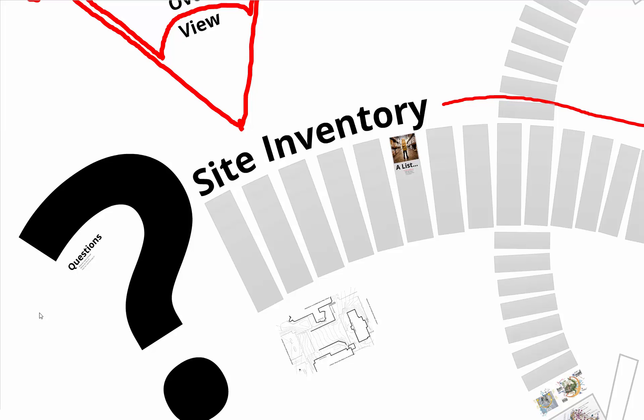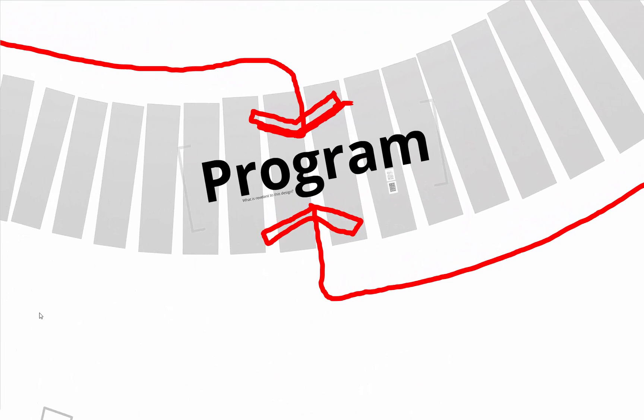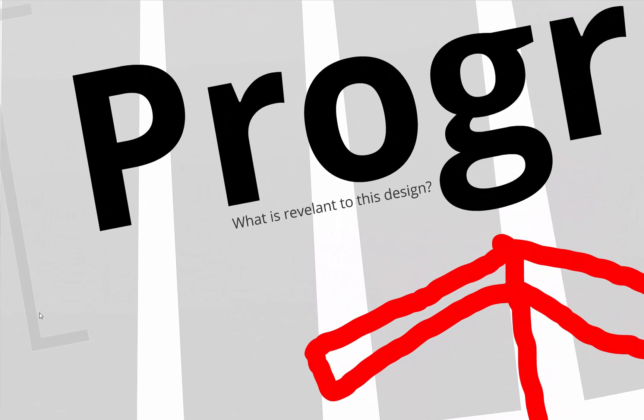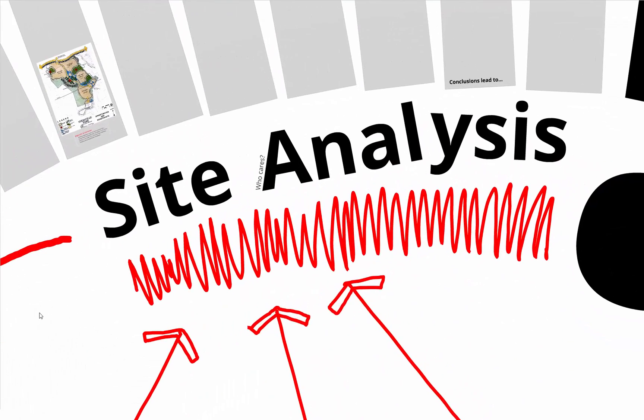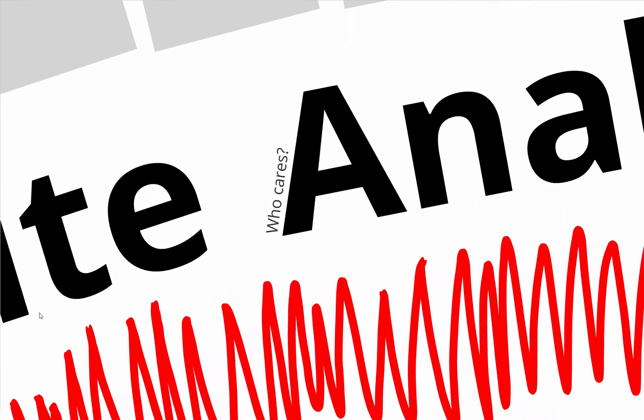One of the big confusions that happens every year when we ask students to do a site analysis is that what we end up with is basically a site inventory. That's where you have to start, but it's not a site analysis. We're going to talk about how program is important — there are lots of factors on every site you could look at, but some of them aren't relevant to what you're trying to do.